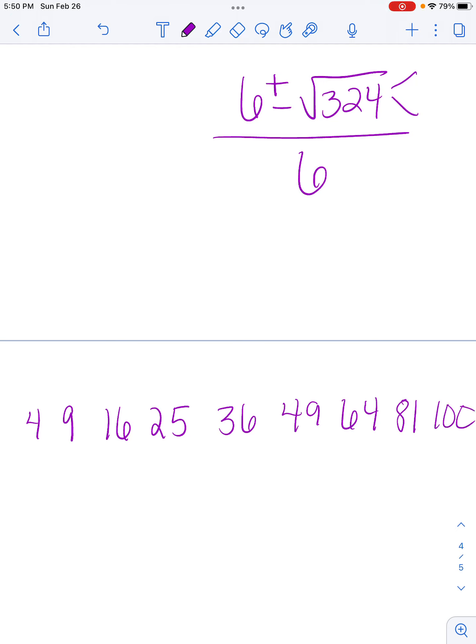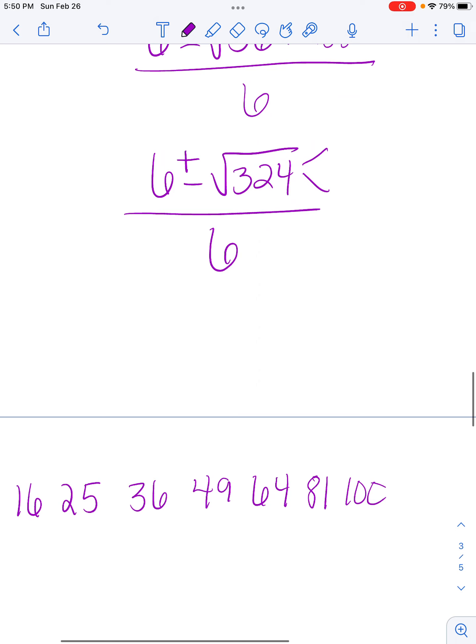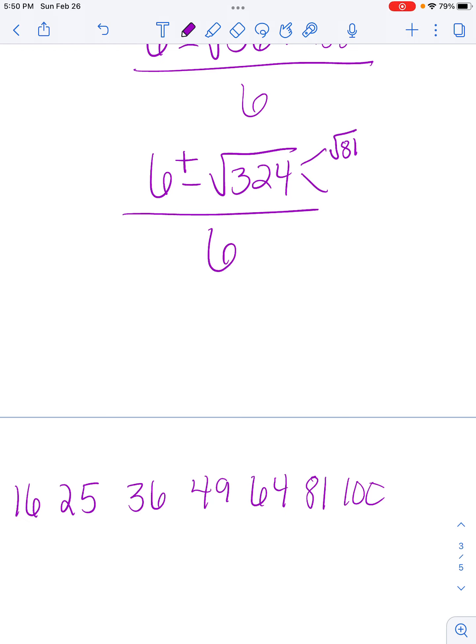So I know that it doesn't end in a 0 so I'm not going to try 100, but I am going to try 81 and I get a whole number. So it's square root of 81. I put 324 divided by 81 in my calculator and I see that it comes out to 81 and 4. So I can break 81 to 9 and 9, and 4 to 2 and 2.